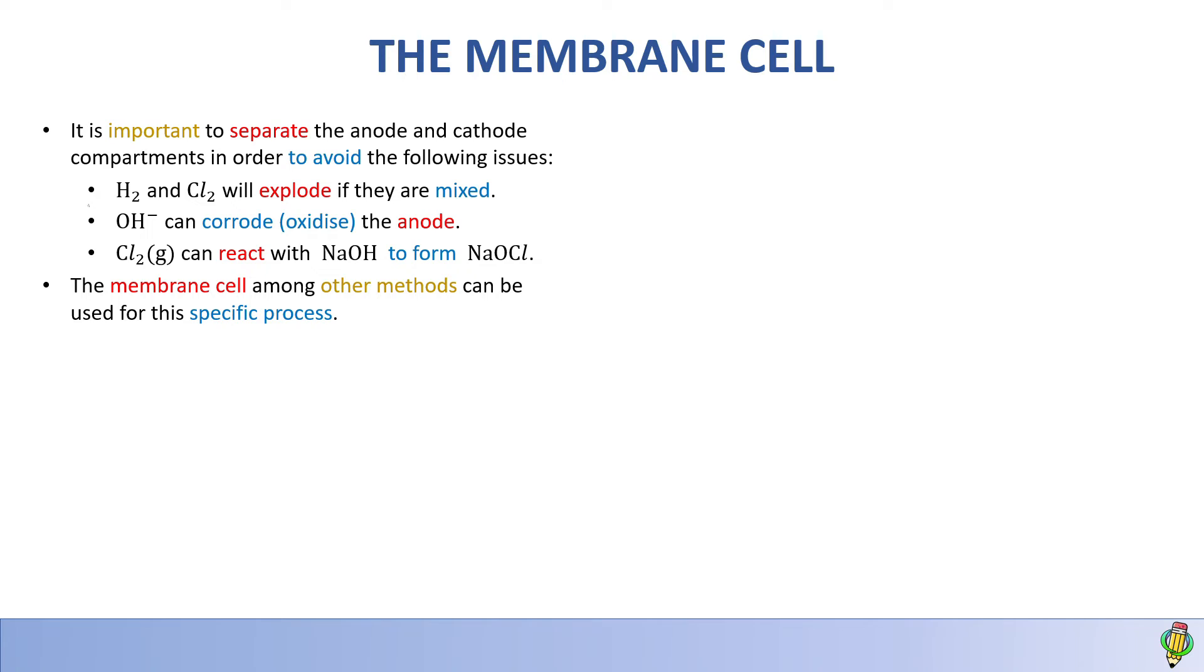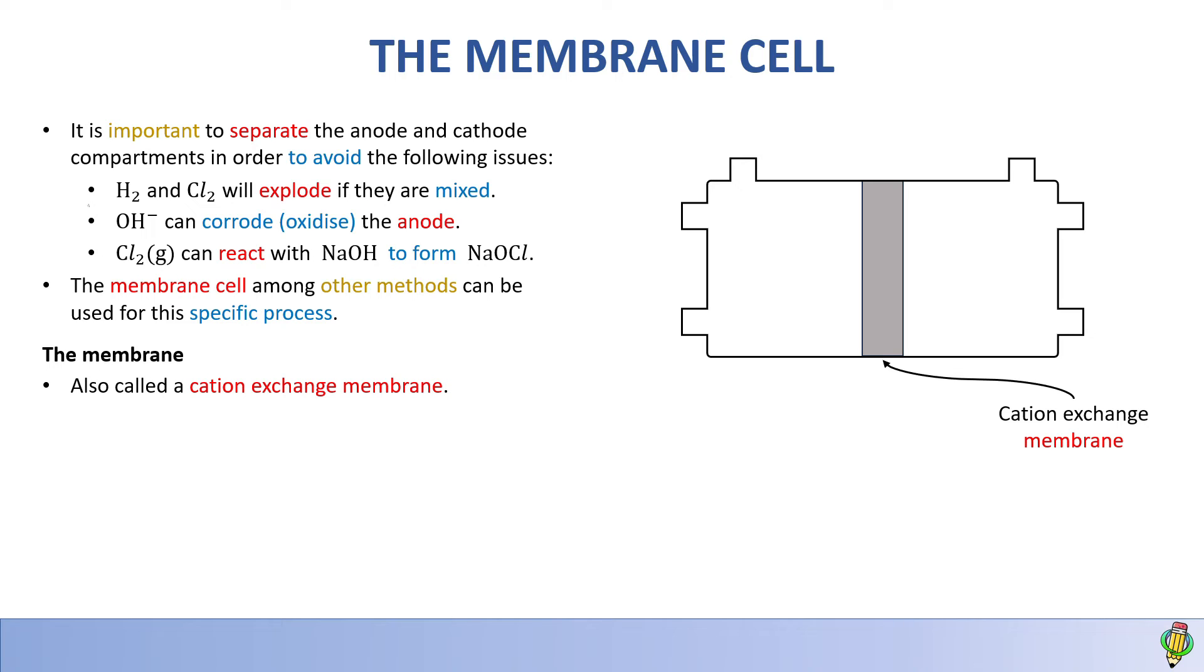The membrane cell can be used in industry for the chlor-alkali process. We need a cell with a membrane separating two compartments. This membrane is called a cation exchange membrane because it only allows positive ions or cations to pass through. We pour brine on one side and water on the other, then put in electrodes and complete the circuit with a power source.